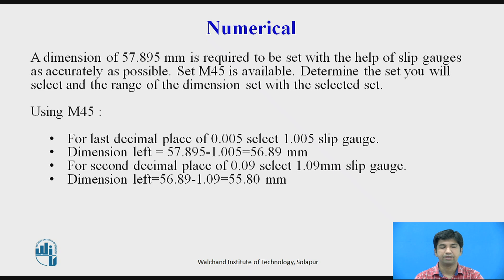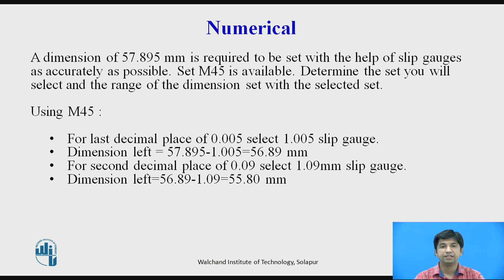For 57.895 mm, concentrating on the last (third) decimal place: for the value 0.005, select the 1.005 mm slip gauge. Dimension left: 57.895 − 1.005 = 56.89 mm. Moving to the second decimal place, the value is 0.09, so select the 1.09 mm slip gauge, which is available in the M45 set.